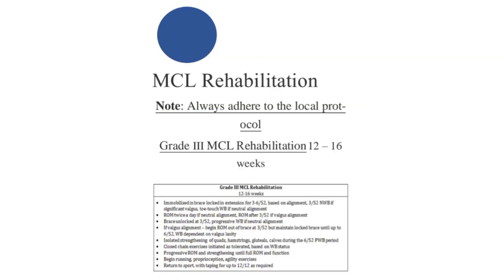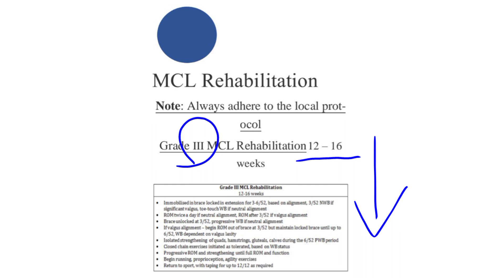For Grade 3 MCL rehabilitation, the timeline is 12 to 16 weeks. Initial goals include immobilization with a brace locked in extension, range of motion exercises, weight-bearing exercises, and isolated strengthening using isometrics and isokinetics. The patient progresses gradually from the initial stage through to return to full sports activities.